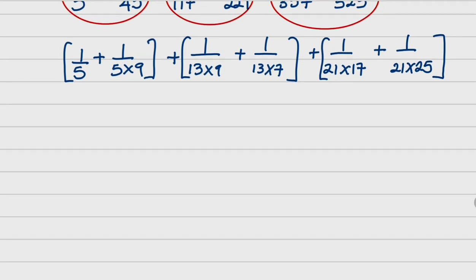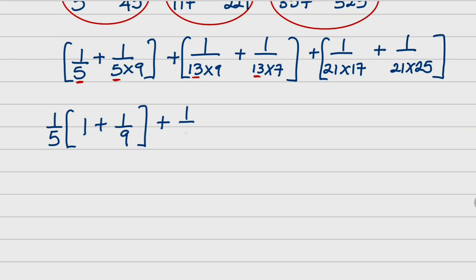Now, having this set, you can factorize. Check it here: we have 5 at the denominator here and 5 at the denominator here. So we can bring out 1 over 5, then into 1 plus 1 over 9. The same thing we are going to do to the second set, because we have 13 here and 13 here at the denominator. So we are going to bring 1 over 13 out, so that we have 1 over 9 plus 1 over 17. Close the bracket.